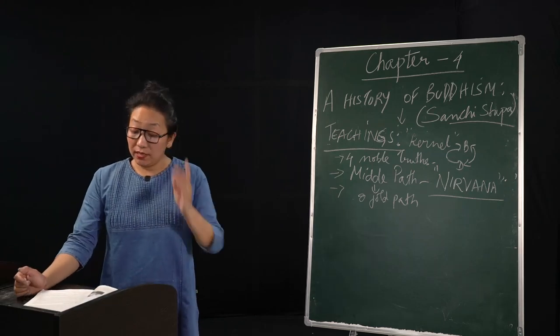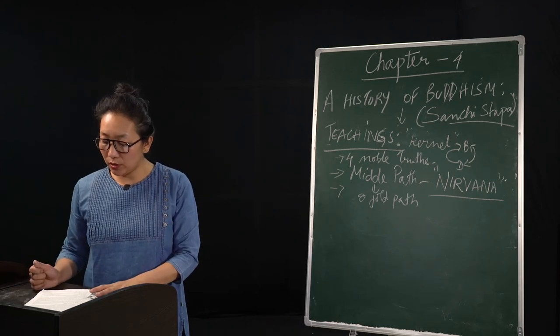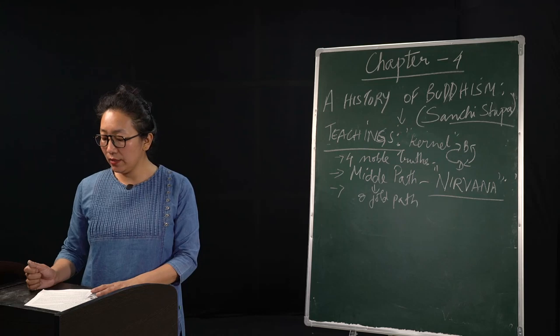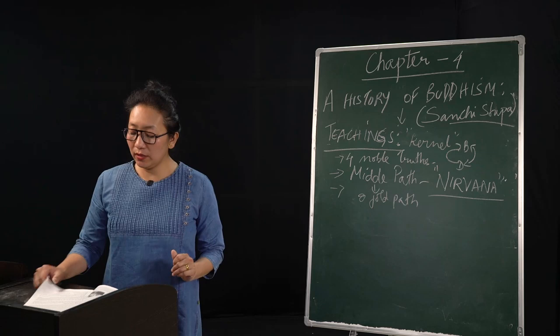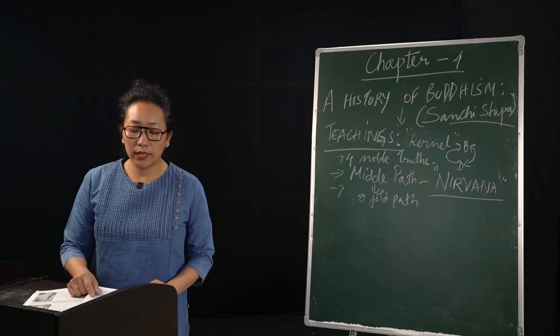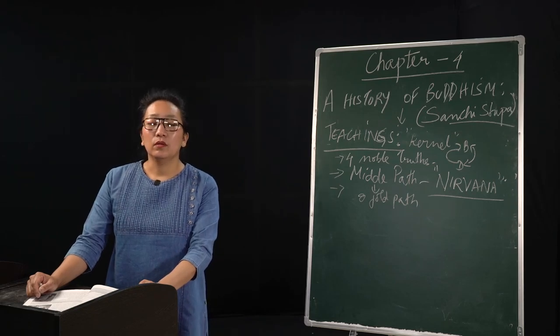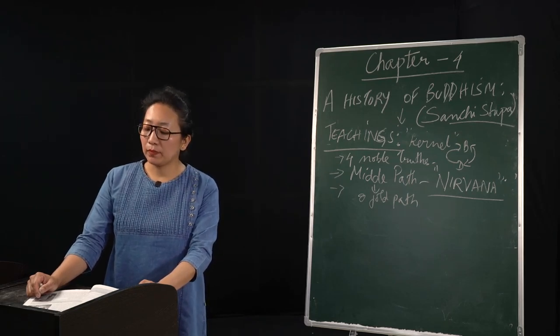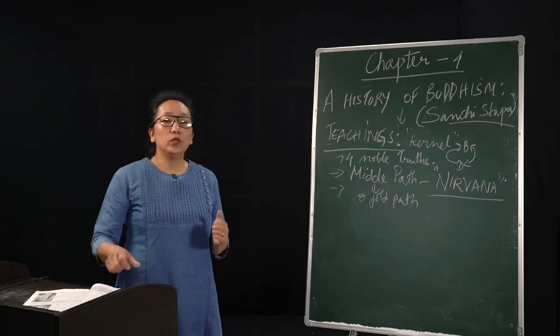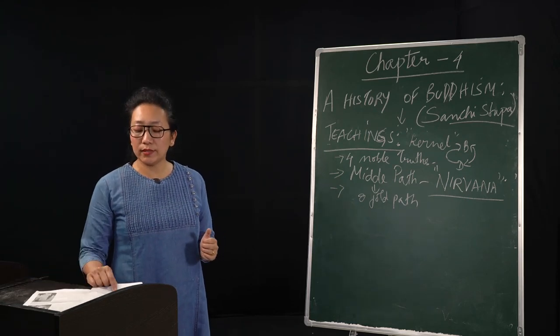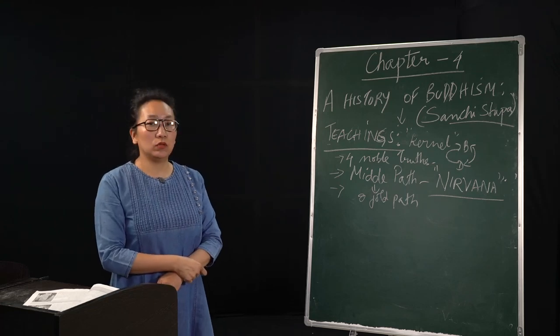And the principles that he laid down here are the Eightfold Path: right view of faith, right belief, right speech. In right speech, one has to be polite and truthful, and one should abstain from lying, slander, abuse, harsh words, and idle talk. Right action, right living, right endeavor, right collection, and right meditation. Meditation to concentrate the mind on the right things was preached by Buddha. So I hope students you will be able to get all these points in page number 73 and 74 for the teachings, for you to make a note later on also.